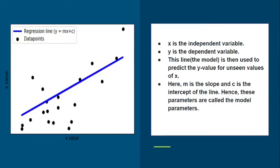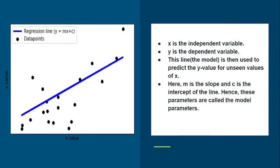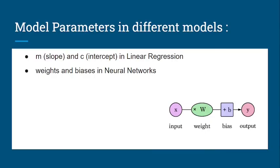Here, m is the slope and c is the intercept of the line. These two parameters, m and c, are estimated by fitting a straight line to the data by minimizing the root mean squared error. Hence, these are called the model parameters.